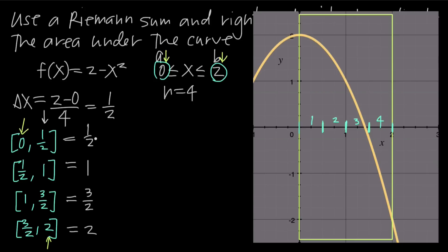For the first subinterval from 0 to 1/2, we draw a rectangle with its base there and bring the right side up to meet the function at x equals 1/2. That upper-right corner touches the graph, and we draw in the rectangle. For the second subinterval from 1/2 to 1, the right endpoint is x equals 1 — we go up to the graph and draw a rectangle whose upper-right corner meets that point.